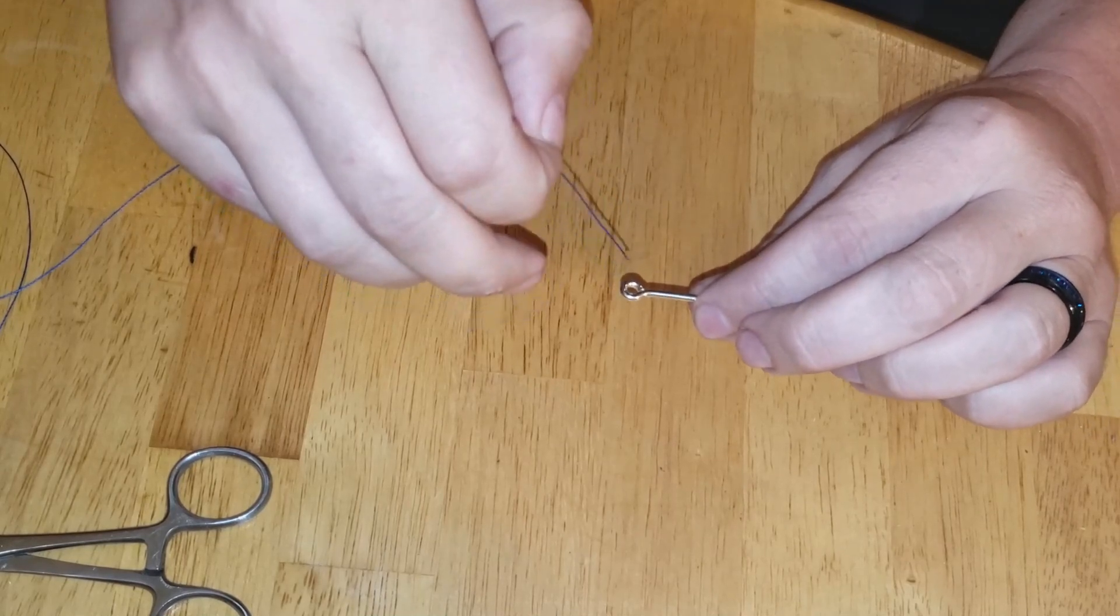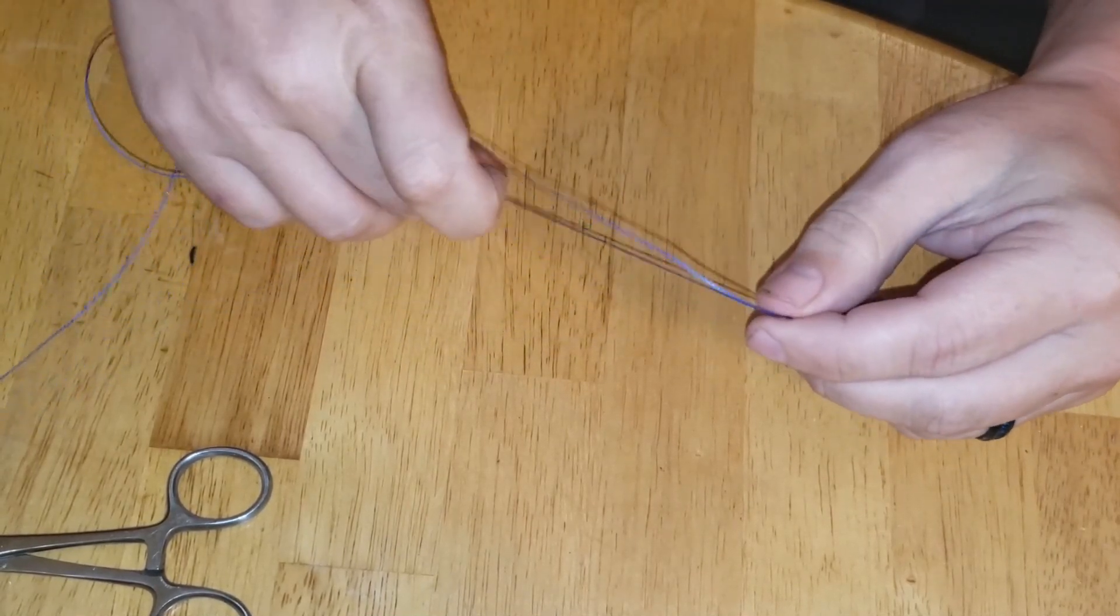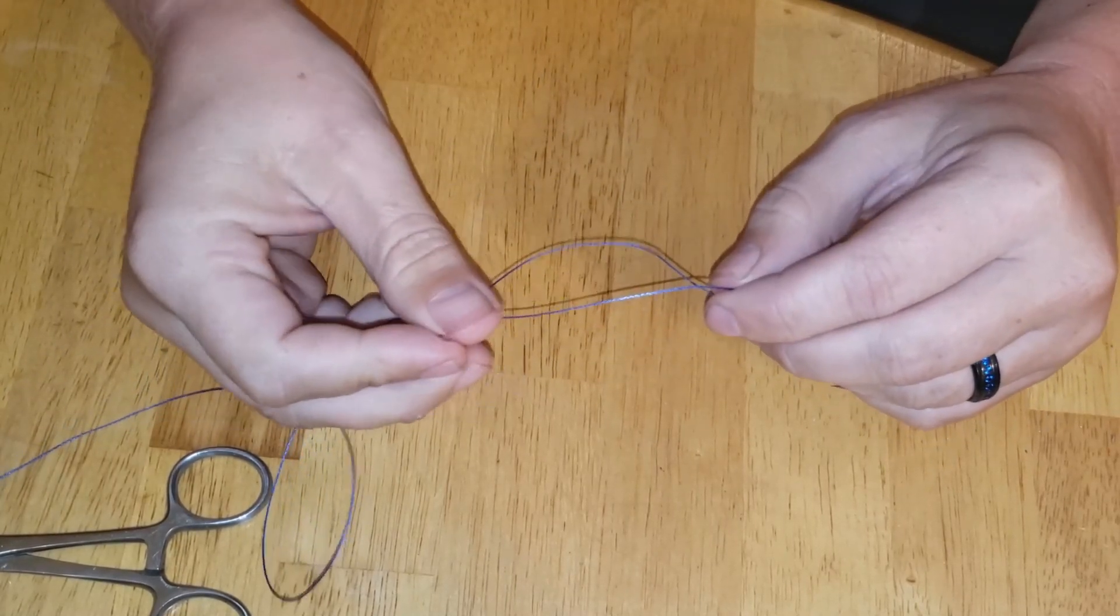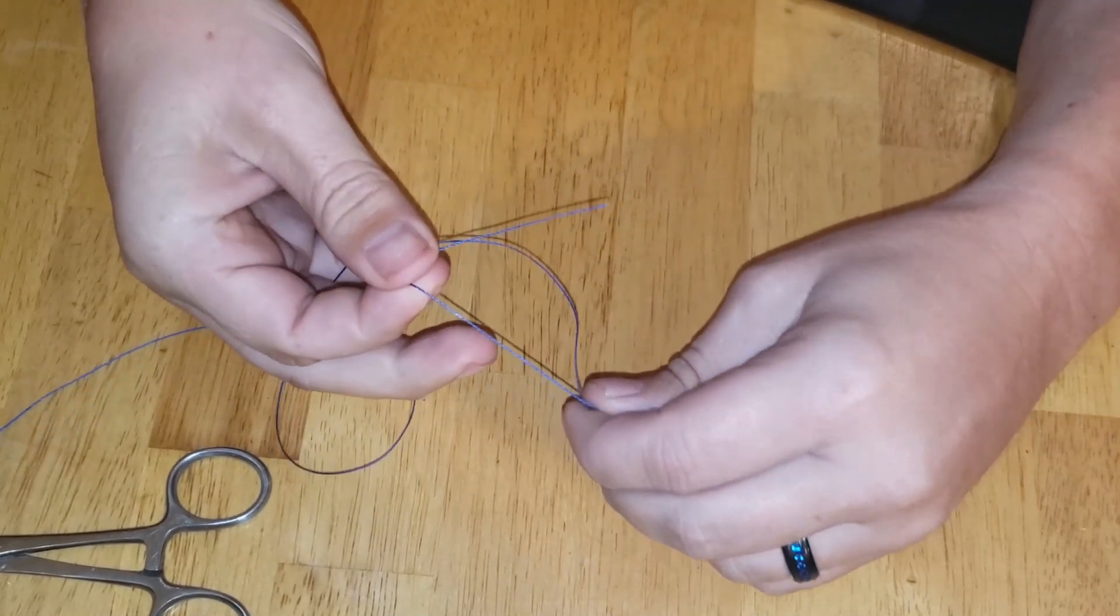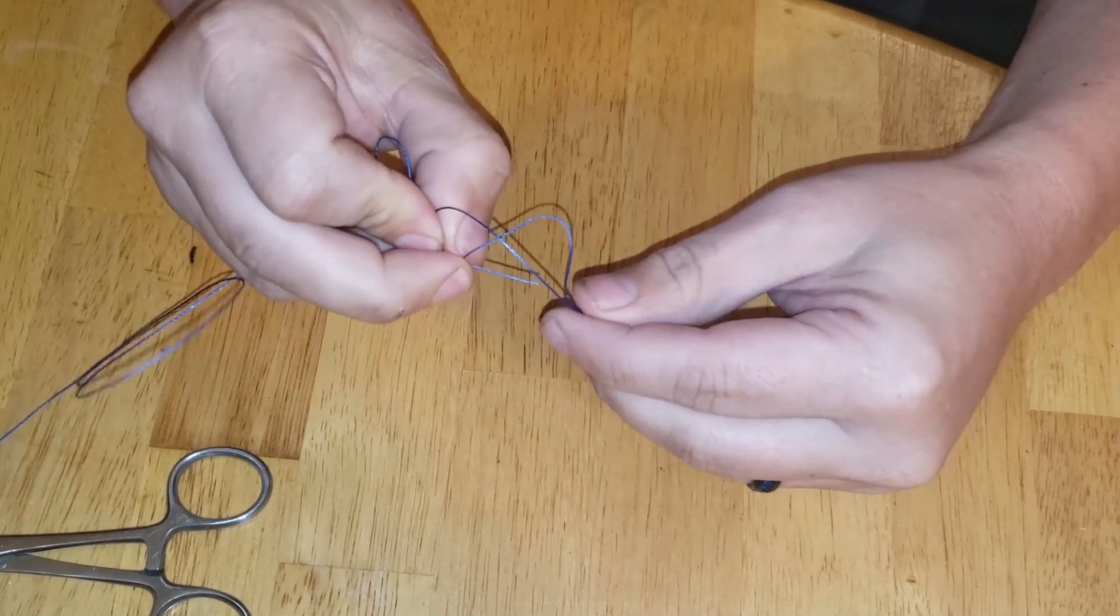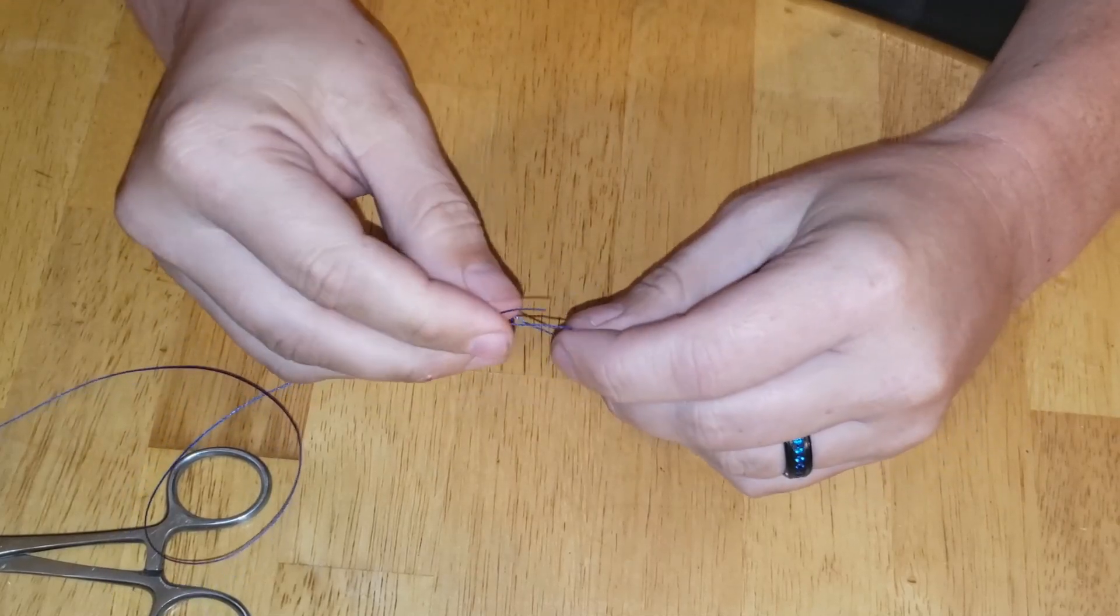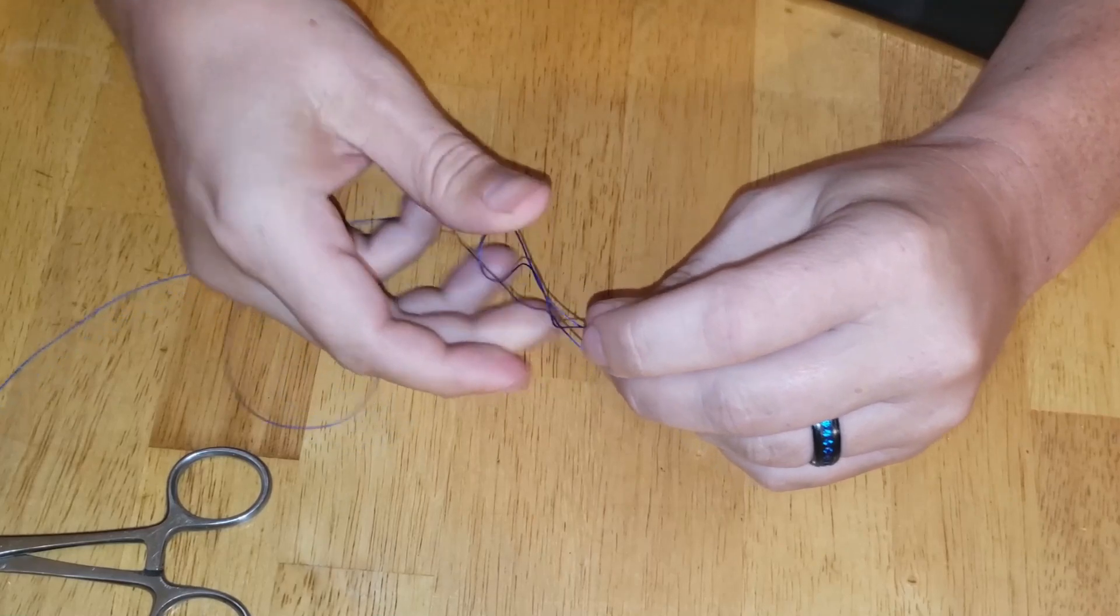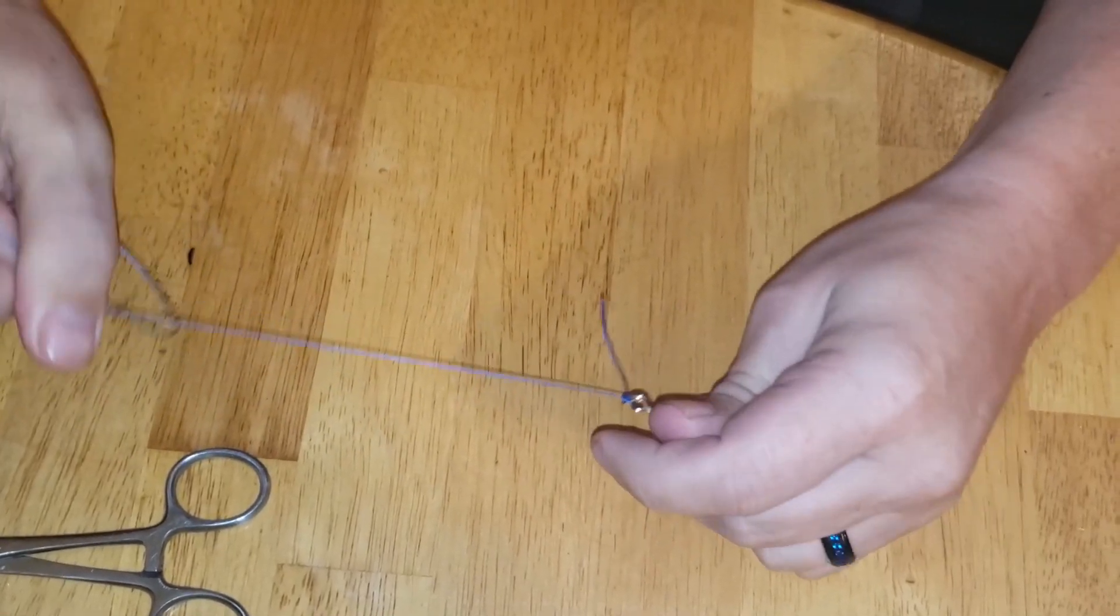All right, so first you want to go down the eye of the hook like that and you make a loop. You go over the line through like that, and down back under and through like that. Then over and through and pull like that.